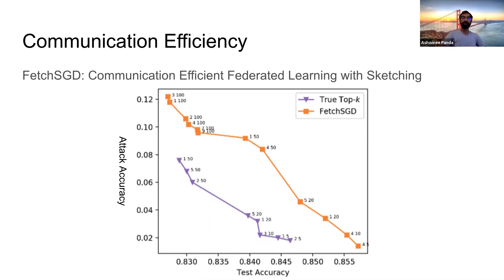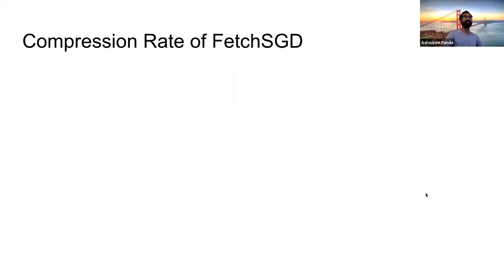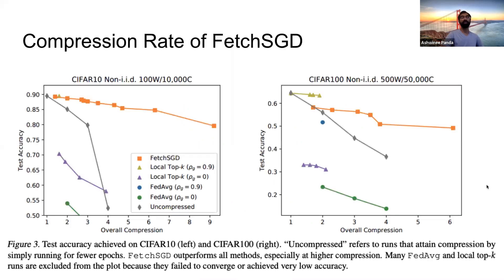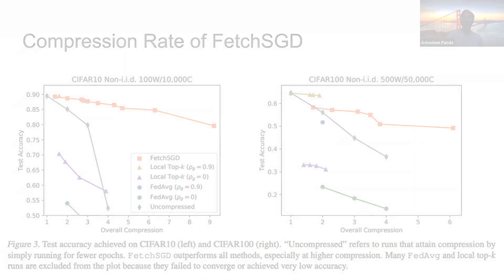Both of these algorithms were created by exploiting the inductive bias of sparsity in deep learning. That is, stochastic first-order methods tend to produce updates which are sparse, and this presents an opportunity to increase both robustness and communication efficiency. Thank you. If you have any questions about the talk, please feel free to ask me.